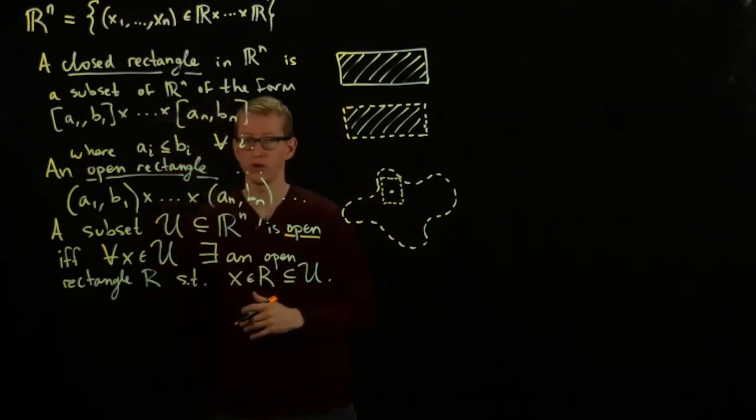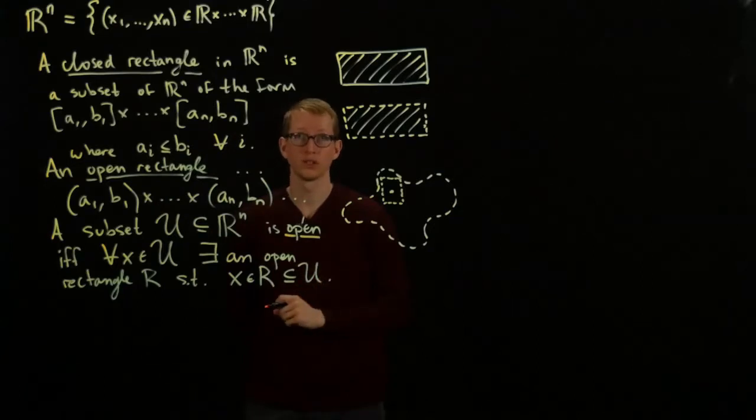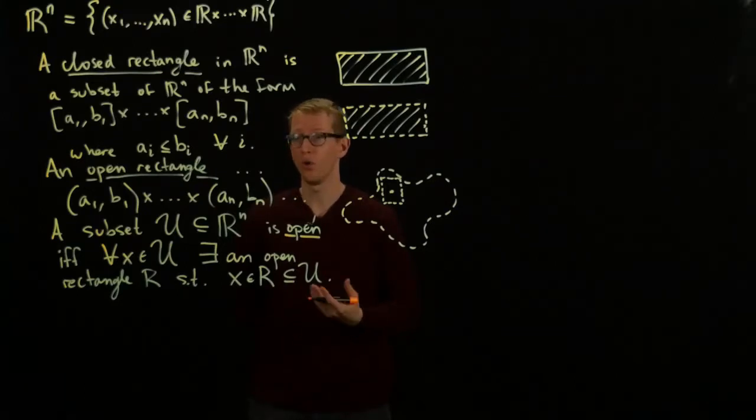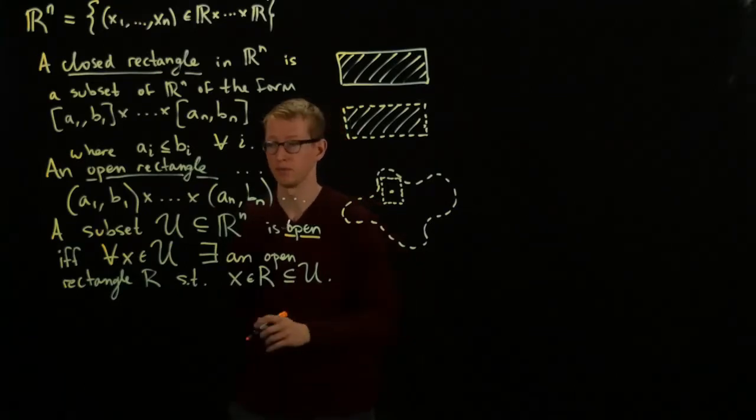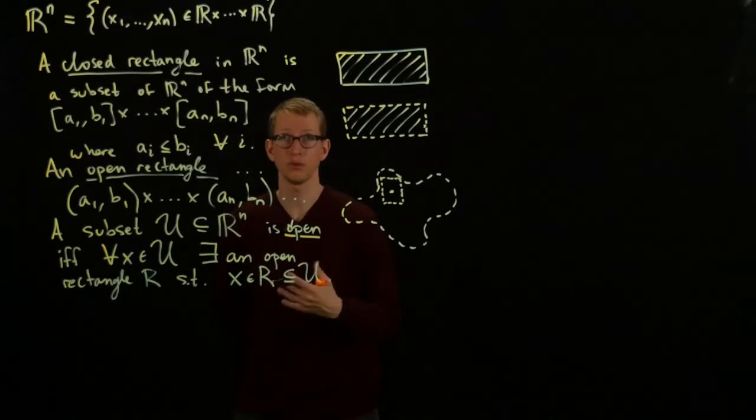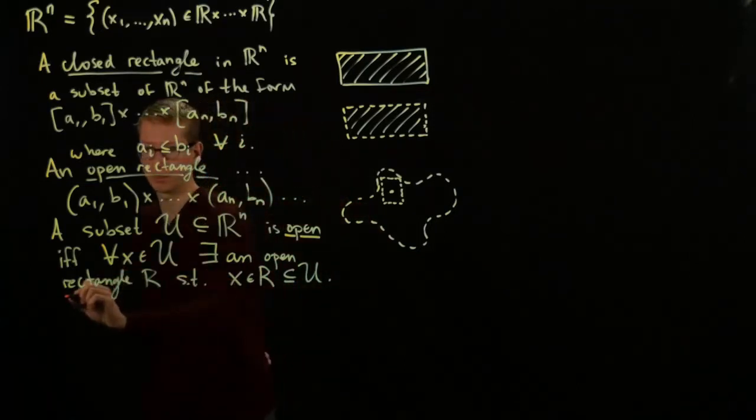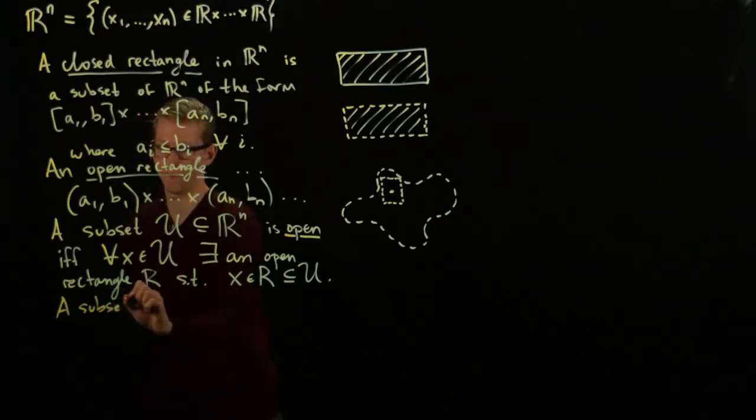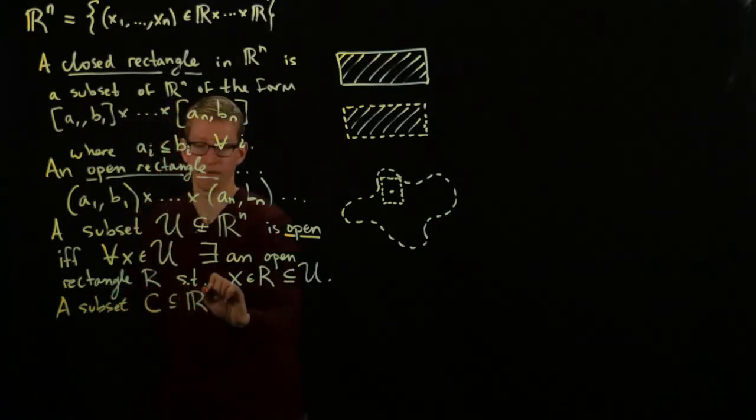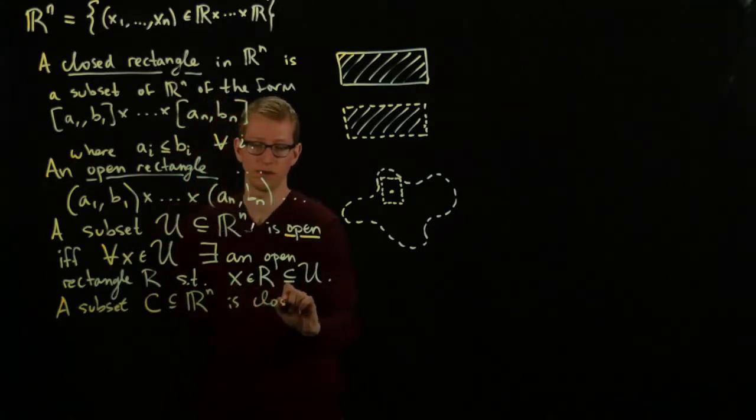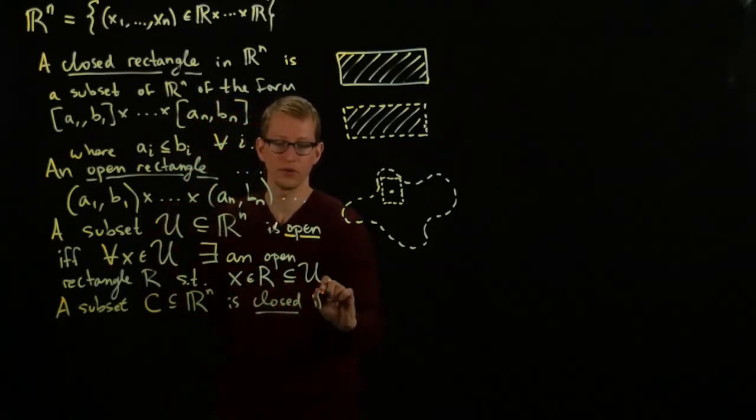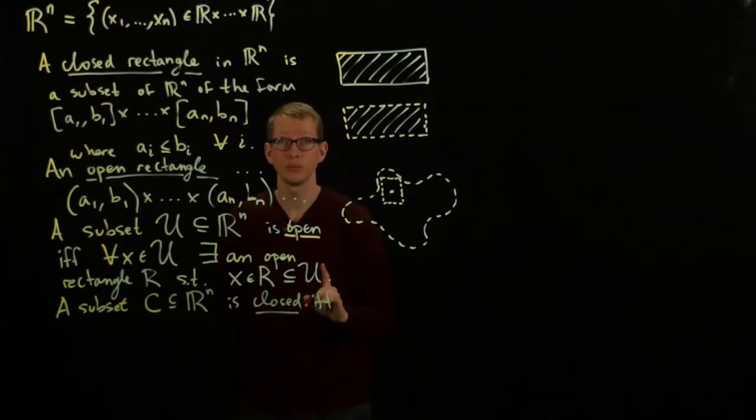Now, we also learned several definitions of what it meant for a subset of the real line to be closed in terms of sequences, for instance, or other more topological definitions, and we'll use the more topological one. So, similarly, a subset C in R^n is closed if and only if its complement is open.